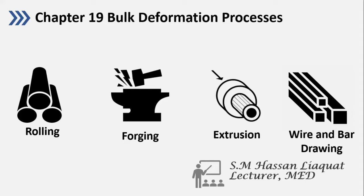Let's continue our discussion on the metal forming process. In the last lectures, lectures 10 and 11, we discussed fundamentals of metal forming — how flow stress works, the difference between engineering stress and true stress, and the effect of strain rate on the material during hot working. In this chapter we are going to discuss each type of bulk deformation process separately.